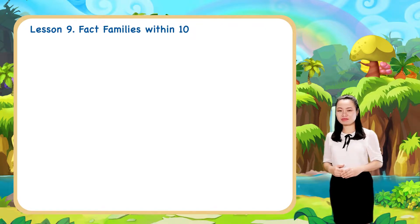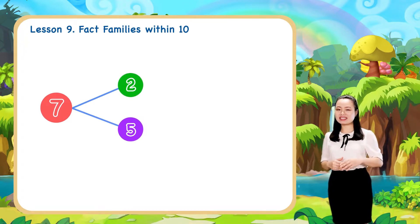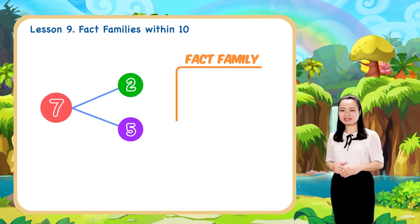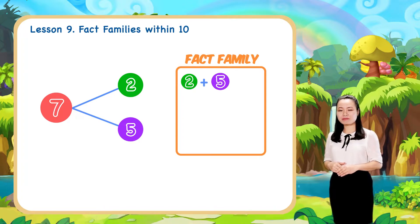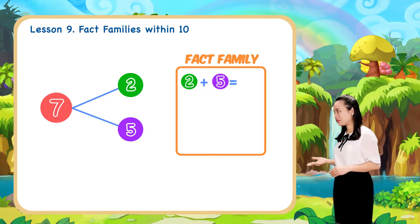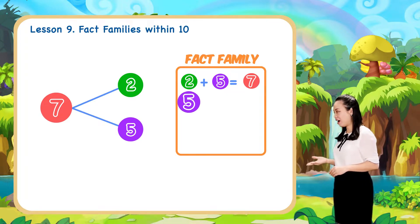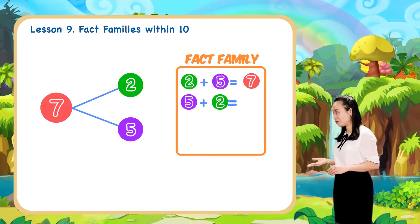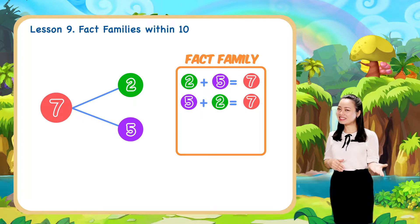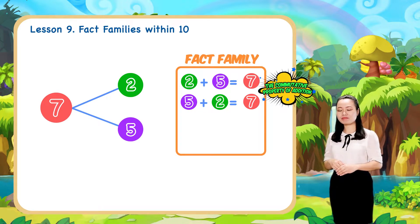Suppose we have this number bond. We can create a fact family. First, we have 2 plus 5 equals 7. Second, 5 plus 2 equals 7. You can see the commutative property of addition here.